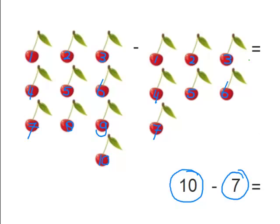So now we need to cross off 7 of the cherries on the 10 side to see what this problem's answer is. So start. 1, 2, 3, 4, 5, 6, 7.